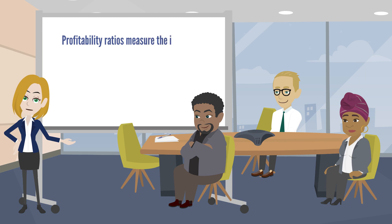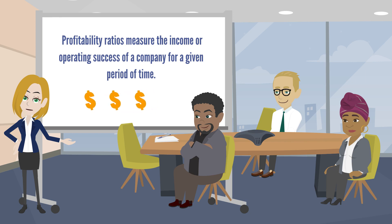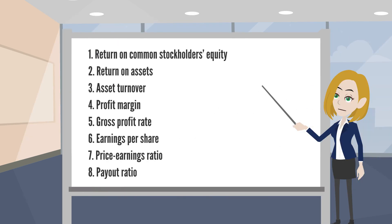Profitability ratios measure the income or operating success of a company for a given period of time. Both creditors and investors are interested in evaluating profitability. Profitability is frequently used as the ultimate test of management's operating effectiveness. Several profitability ratios compare income with other items reported in the financial statements, such as common stockholders' equity, total assets, and net sales.